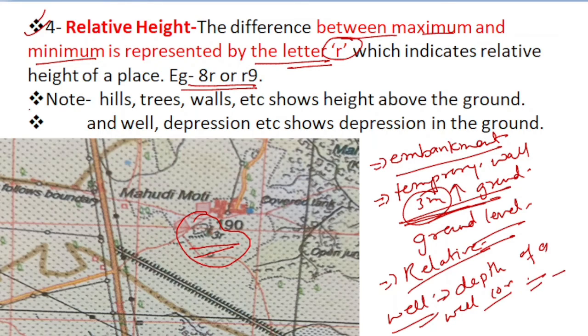Important point: hills, trees, walls, etc. show height above the ground, whereas wells, depressions, etc. show depressions into the ground. These are marked above the ground level, whereas these features are marked into the ground.